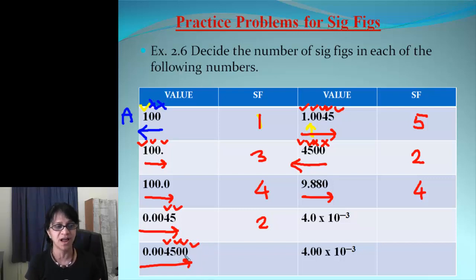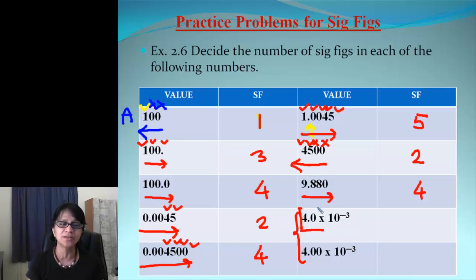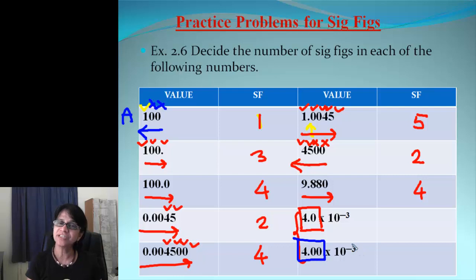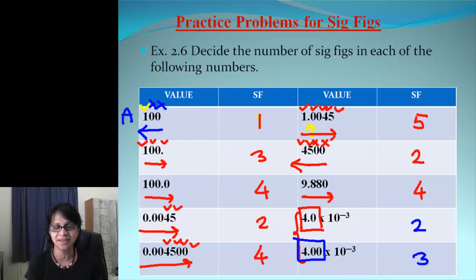We still continue counting the last two zeros, so we end up having 4 sig figs. For the last questions which are in scientific notation, it's very easy: we only focus on the coefficient part. Imagine that number alone — how many sig figs does it have? So 4.0 will have 2 sig figs, and 4.00 — decimal point present — will have 3 sig figs.